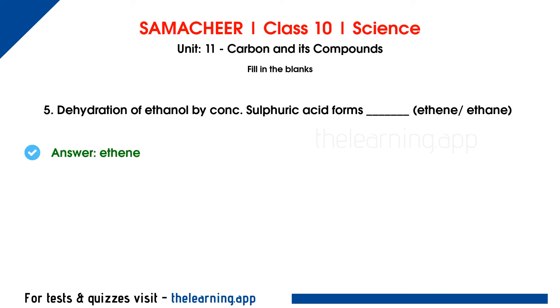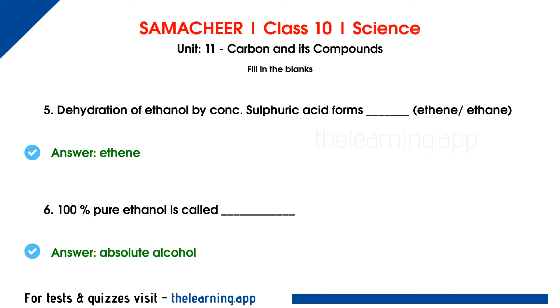Dehydration of ethanol by concentrated sulfuric acid forms dash — correct answer is ethene. Sixth question: 100% pure ethanol is called dash — correct answer is absolute alcohol. 100% pure ethanol is called absolute alcohol.